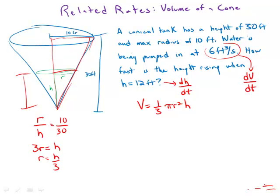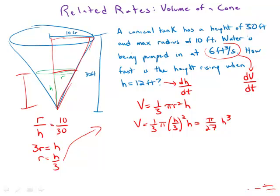That's enormously helpful because we can plug that expression into the volume formula. We get one-third pi times (h over 3) squared times h. Simplifying, this becomes pi over 27 times h cubed. Now we have a direct formula between V and h — the two variables we want to relate. You should always create that relationship before taking a derivative.